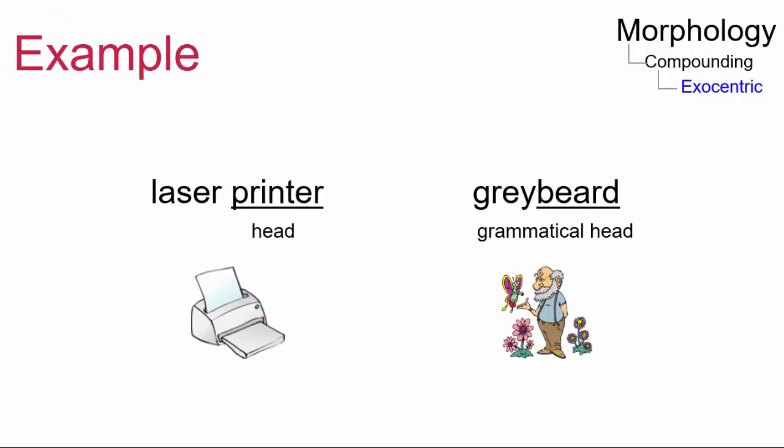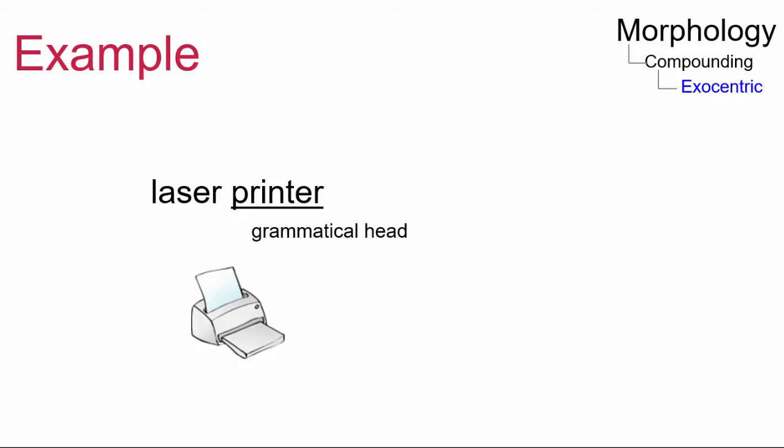Compare these two examples: laser printer and graybeard. In the first example, printer is both the grammatical and semantic head of the compound. Grammatically speaking, printer takes on all the inflectional markers — for instance, laser printer can be pluralized to laser printers. Semantically speaking, a laser printer is a type of printer.